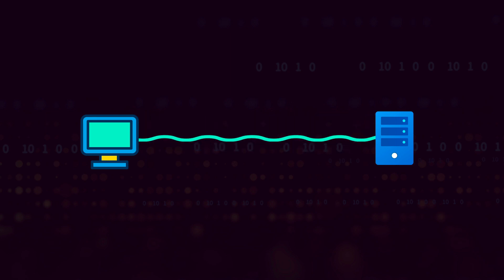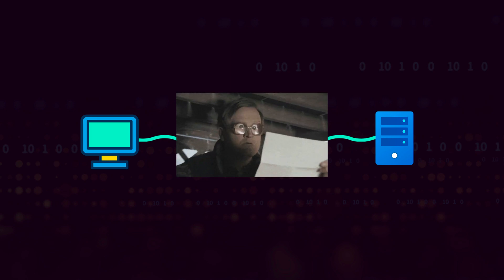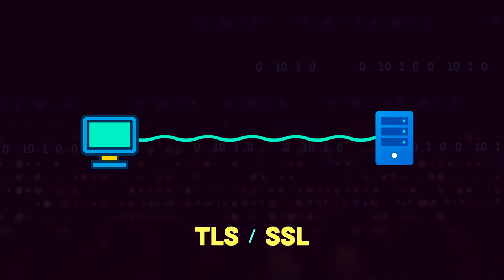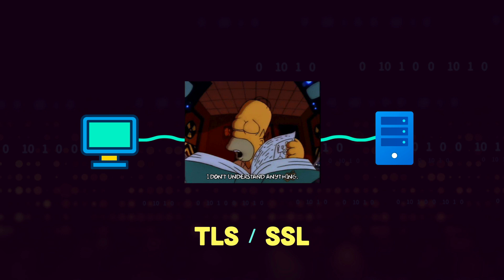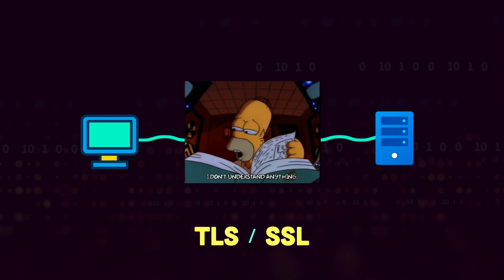Anyone sitting between you and the server can intercept and look at the data that you're sending. By using SSL or TLS you encrypt the data that you're sending over the network, so no one sitting between you and the server will be able to understand what you're sending.